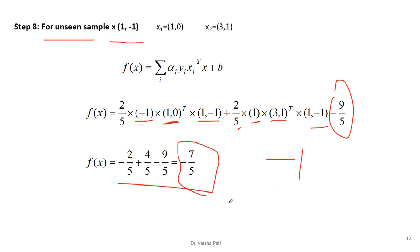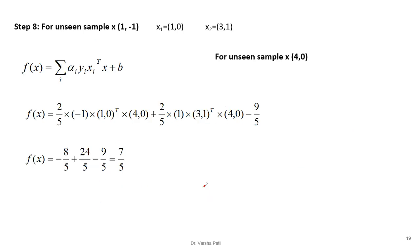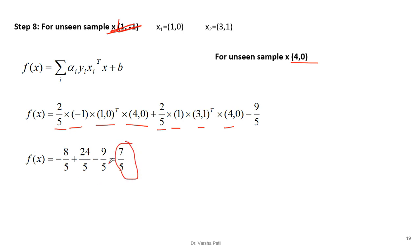Now we test a sample that belongs to the other class. Taking sample x = (4, 0) and following the same procedure — first alpha times first class label times first support vector dot unseen sample, then second alpha times second class label times second support vector dot unseen sample, minus bias — we get +7/5. Since this value is positive, the sample belongs to the plus class, which is the second class.